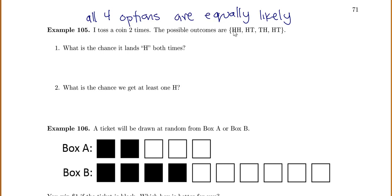HH means we got head then head, HT means head then tail, TH means tail then head, and TT means tail then tail. What is the chance that it lands heads both times? With four equally likely outcomes and only one HH, the probability is one fourth.